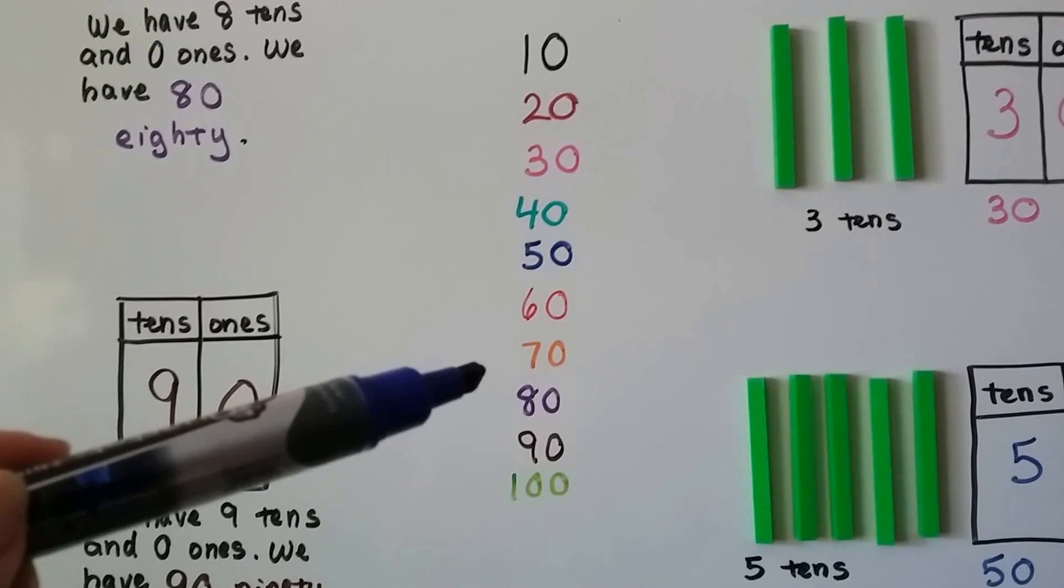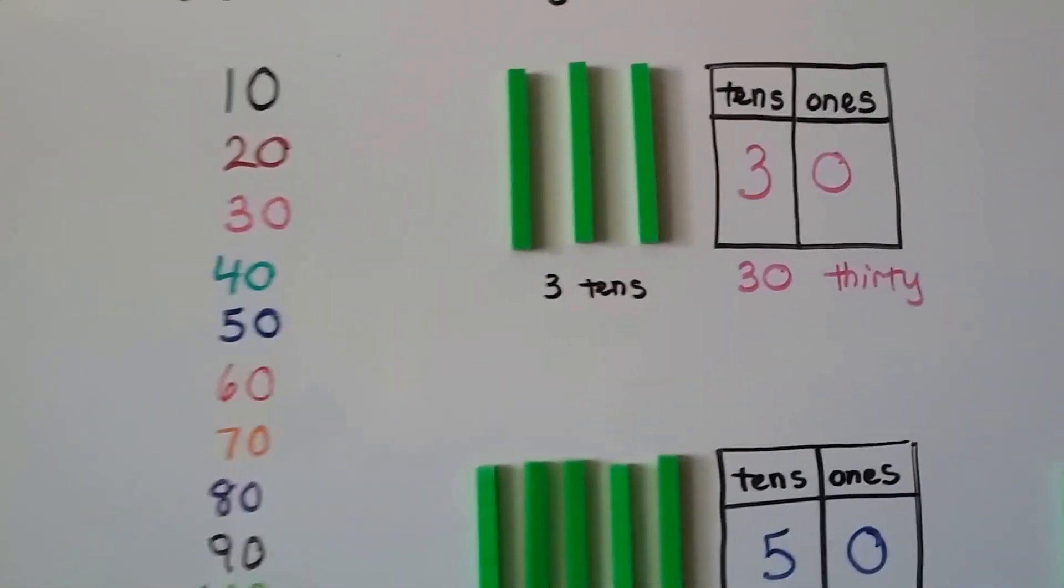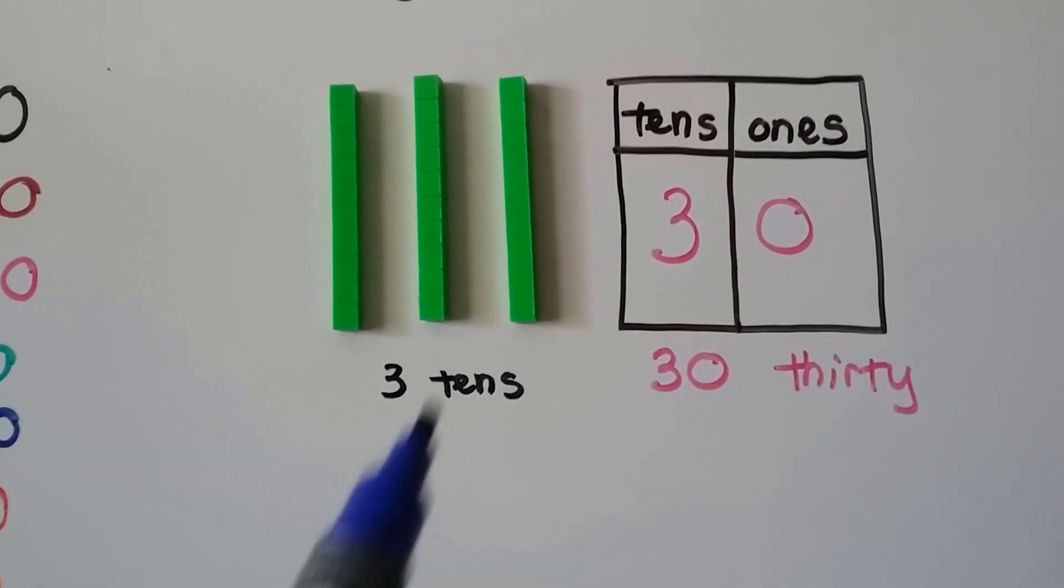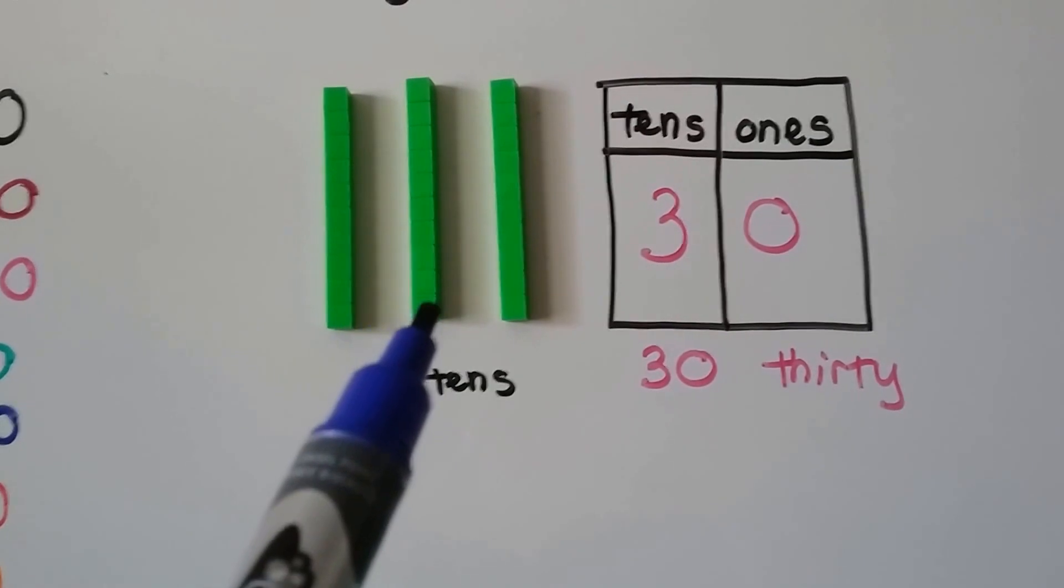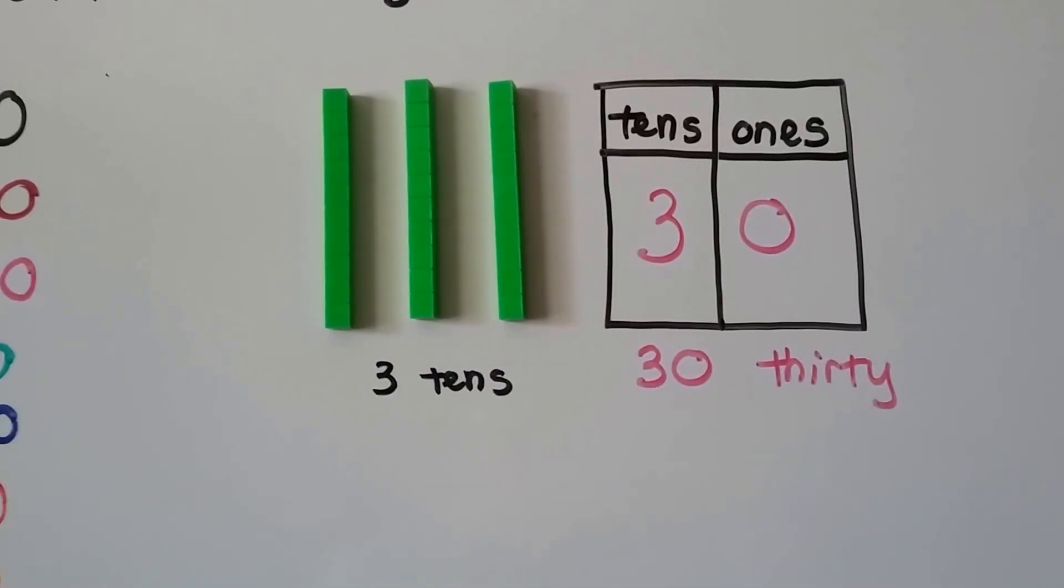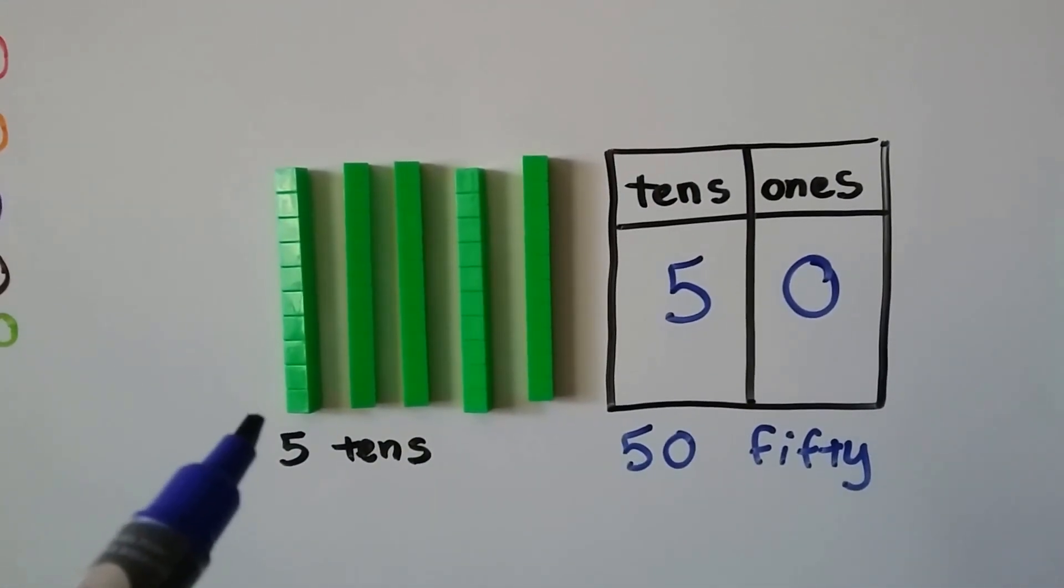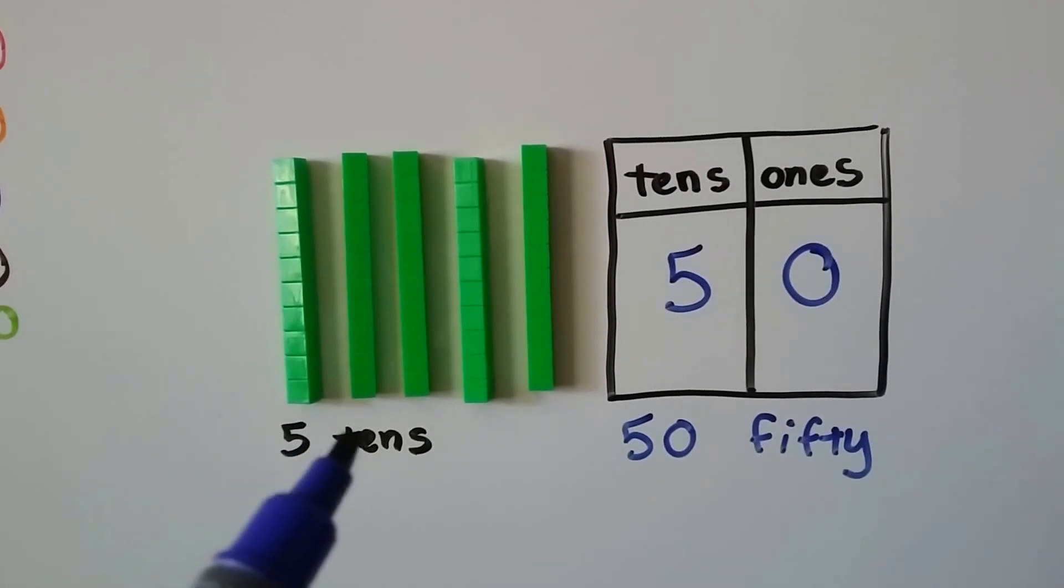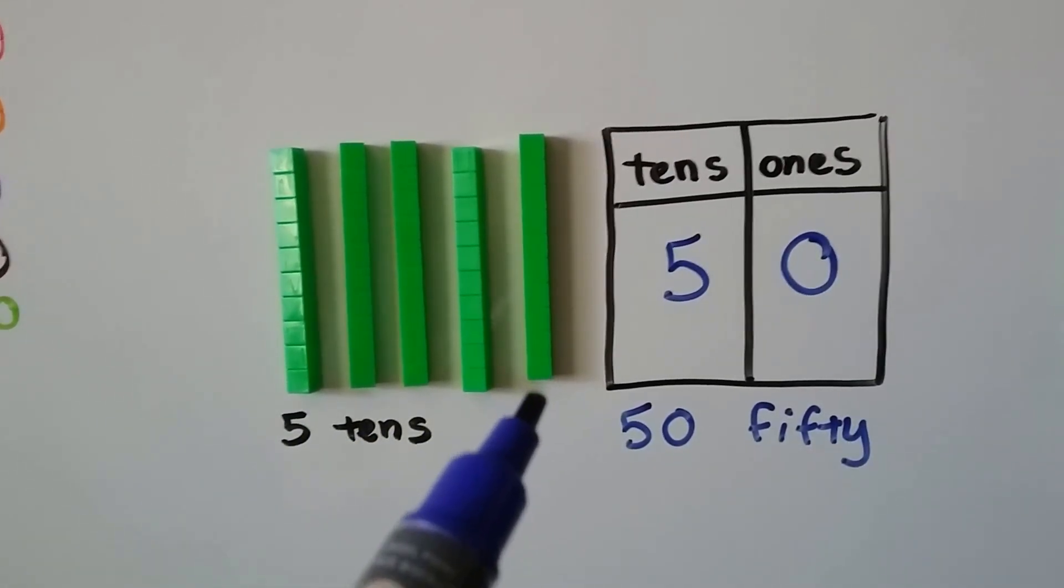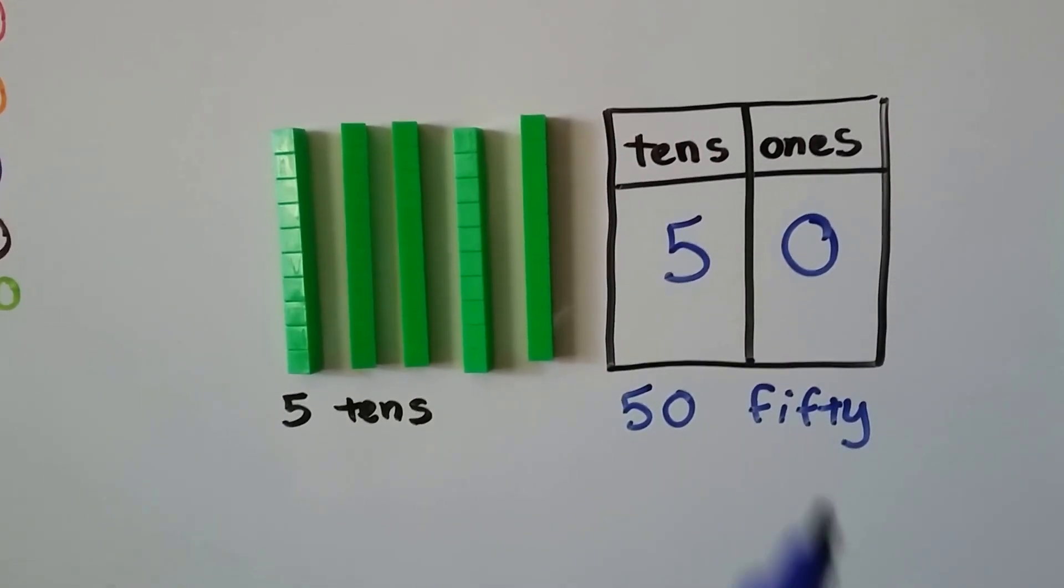For 100, we can count by tens. We have three rods of 10, so we count 10, 20, 30. It's a three-zero, it's 30. We have five tens. We count by 10: 10, 20, 30, 40, 50. Five tens, zero ones. We have a five-zero, that's 50.